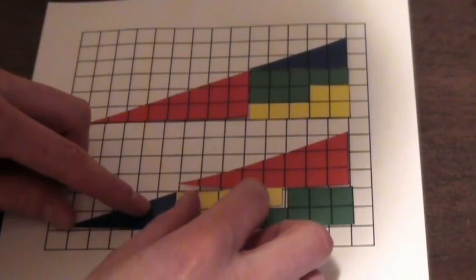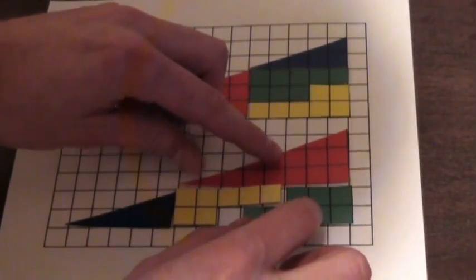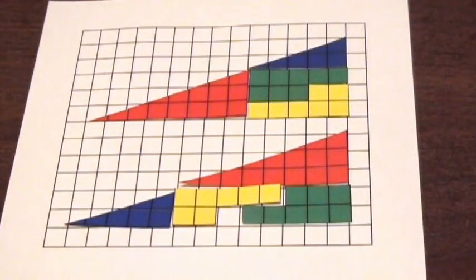But what you'll notice is now there's a missing square. Where did it go?